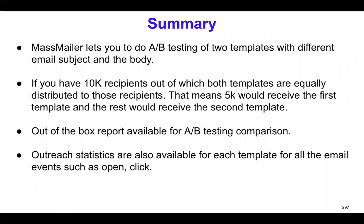That's the fundamental difference in how MassMailer does A/B testing. When it comes to sending out emails, it's very simple — we basically split the recipients in two. Meaning, let's say you've got 10,000 recipients: 5,000 will receive template A and the other 5,000 will receive template B. We go alternate — recipient one receives template A, recipient two receives template B — and that's how we go in series and break it up into half.